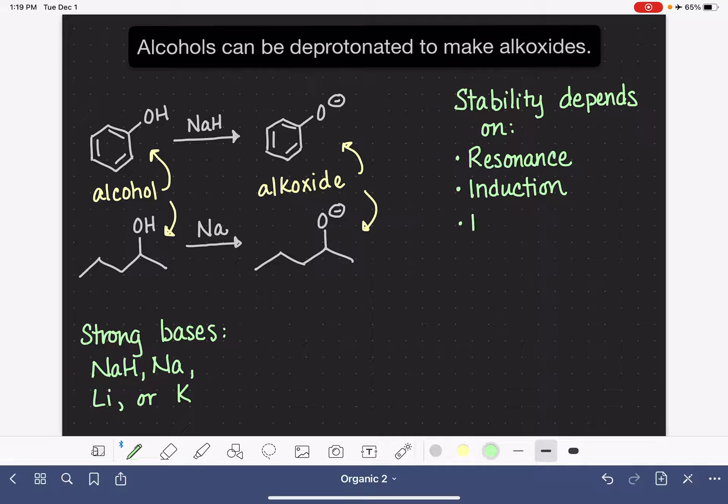Another factor that we can use is branching. This is not something that comes up when we learn about REO. Branching is referring to just having alkyl groups branching in the molecule.